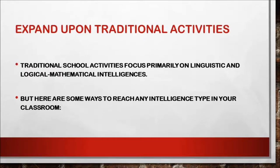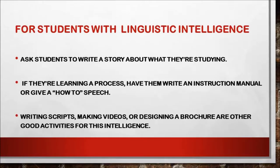Expand upon traditional activities. Traditional school activities focus primarily on linguistic and logical-mathematical intelligences, but here are some ways to reach any intelligence type in your classroom. For students with linguistic intelligence, ask them to write a story about what they study. If they are learning a process, have them write an instructional manual or give a how-to speech. Writing scripts, making videos, or designing a brochure are other good activities for this intelligence.